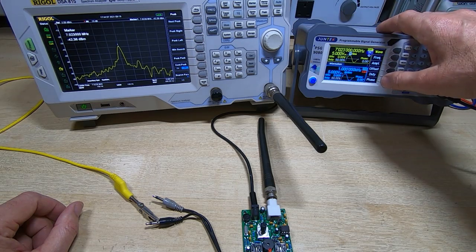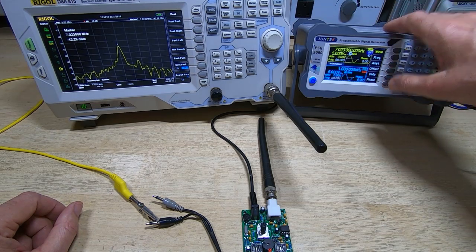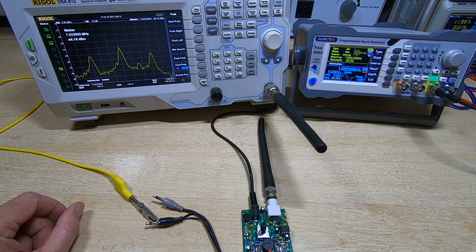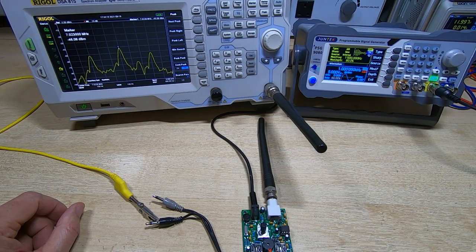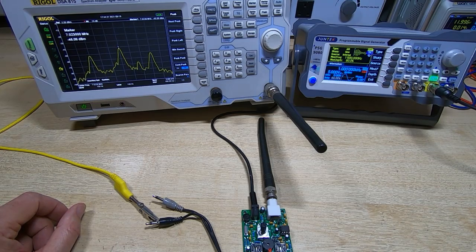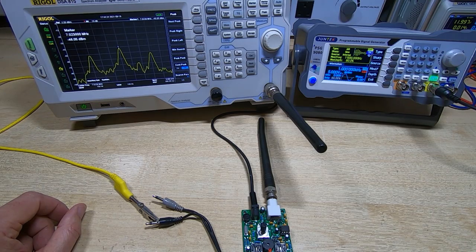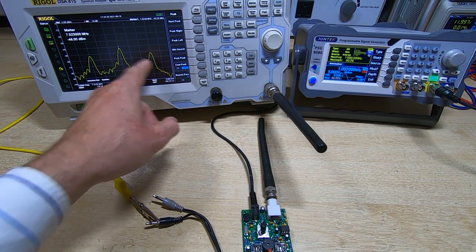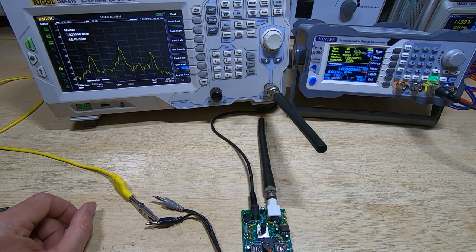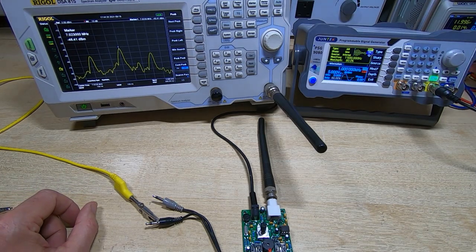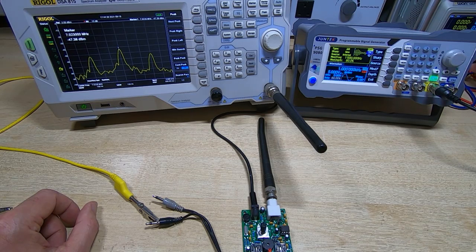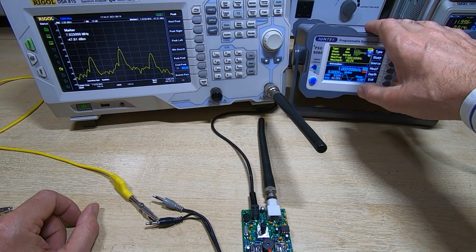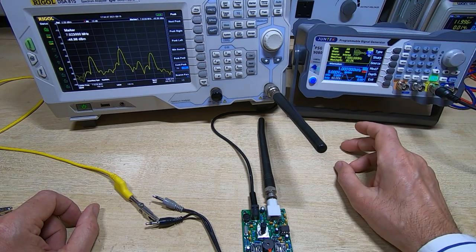That's because we don't have any modulation currently on the transmitting station. So if we come in and we switch on modulation we should hear something, which we can. That's very low level but we are getting a tone coming out of the earpiece from the transceiver board and notice also we're getting these two peaks appearing. And if I turn off the transceiver board, notice those two peaks remain and that's because they're coming from the Juntek.